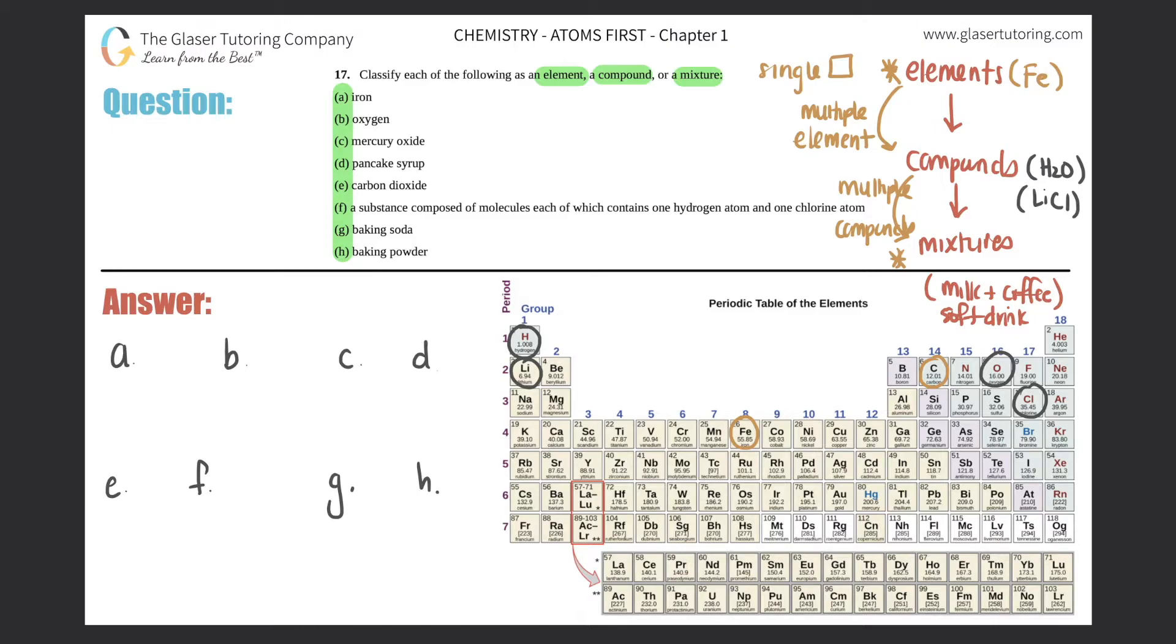For letter A, iron: First I'm going to check if it's an element. Iron - is it a single box on the periodic table? Well, I just circled it before. It's this one. Iron is just Fe. Since it's a single box, it has to be an element.